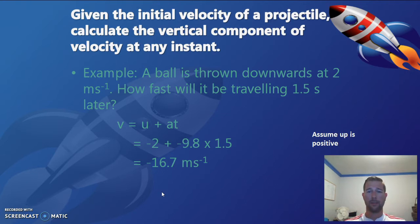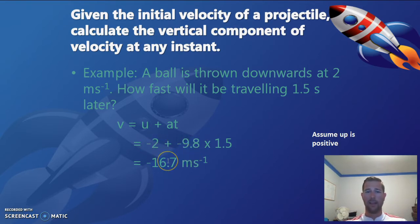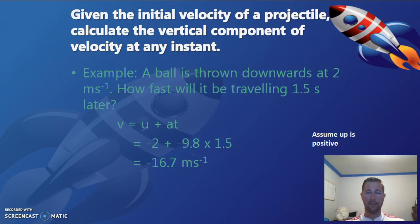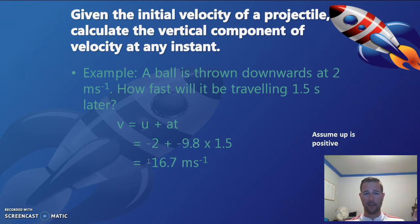In this first example we're calculating the velocity after one and a half seconds of a ball initially thrown at two meters per second towards Earth. Substituting the values, we have negative two and negative nine point eight — using the convention that up is positive, so anything directed downward is negative. The negative two is two meters per second towards the ground, and negative nine point eight is gravity. Our final answer is negative sixteen point seven meters per second, where the negative sign indicates the direction is towards the ground.